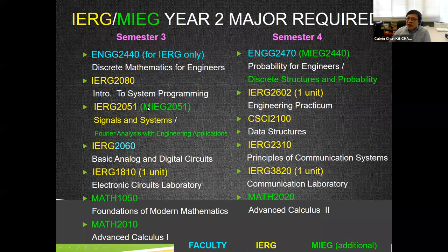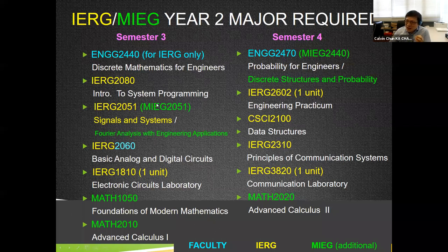For MIEG students, there is a more math-intensive version of 2051 called Fourier Analysis and Engineering Applications, which is much more challenging. IRG students who want the greater challenge are allowed to take MIEG 2051 and then apply for course substitution — we accept that. So if you are strong at math but not yet a MIEG student, you can take MIEG 2051 to substitute the requirement for IRG 2051.